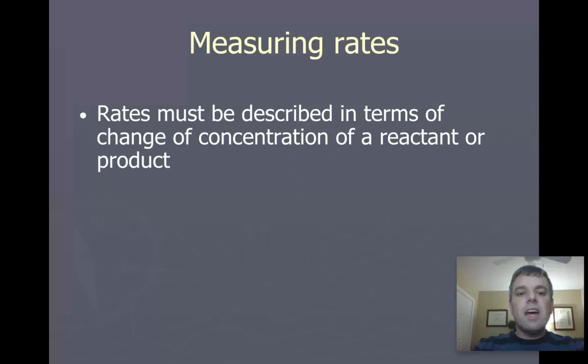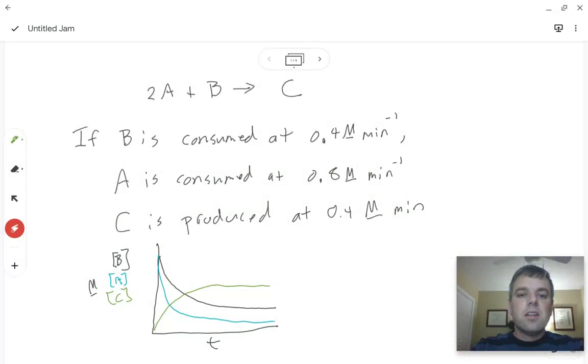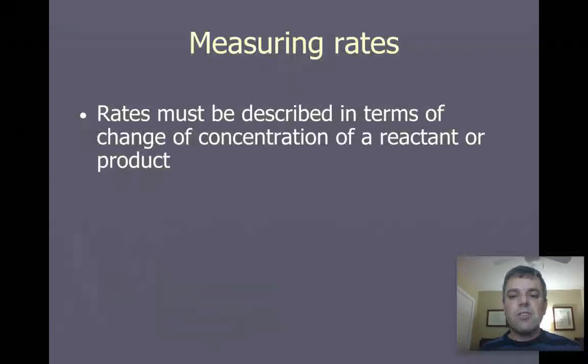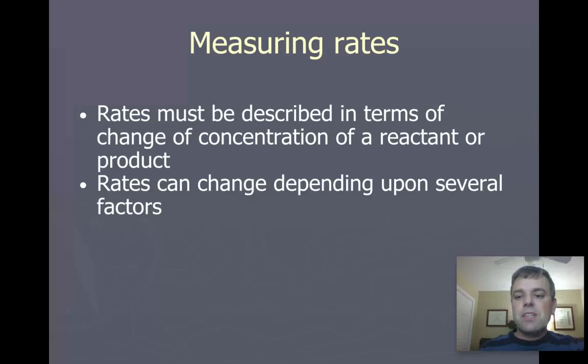A couple more things, measuring rates. Rates have to be described in terms of change of concentration of a reactant or a product. For instance, I'm talking about how fast B is consumed, A is consumed, C is produced. In this case, I chose molarity per minute. You can measure it over seconds or hours or days, depending on how fast this reaction happens.